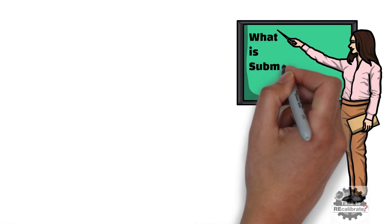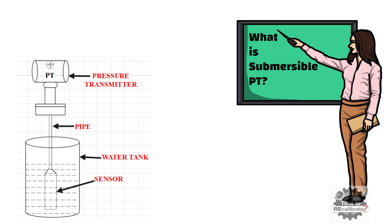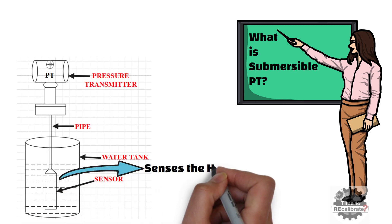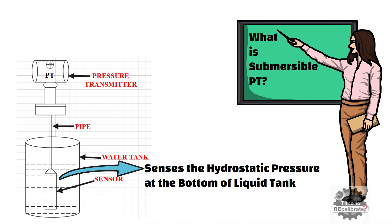First of all, let's start with what is submersible pressure transmitter. The submersible pressure transmitter is the device which senses the hydrostatic pressure at the bottom of liquid tank. In other words, it works on hydrostatic pressure measurement principle.